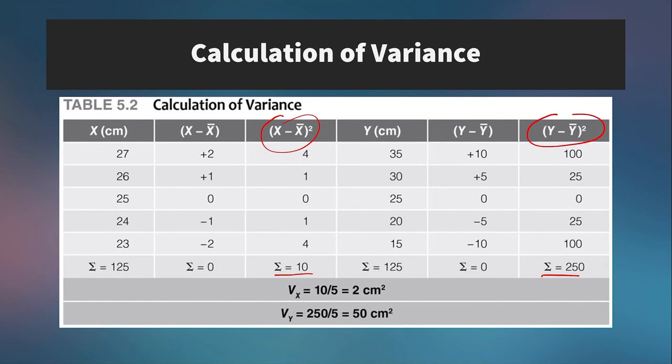And then to calculate variance, we will denote variance by the letter V here. We just divide that by the total number of scores. So we have the total number of scores being 5. So 10 divided by 5 is 2 centimeters, and 250 divided by 5 is 50 centimeters.